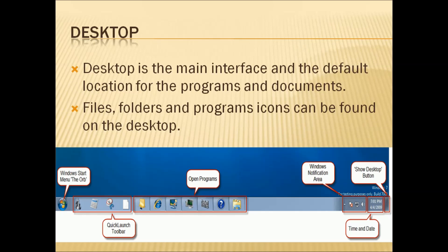For any operating system, the first screen that appears on the computer after you switch on is the desktop. The desktop is the main interface and the default location for programs and documents. Files, folders, and program icons can be found on the desktop. Icons are small graphical images or symbols.